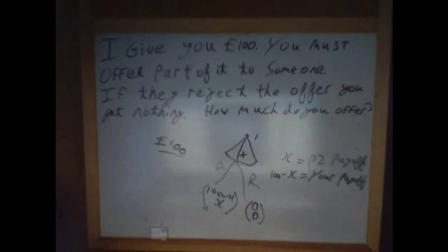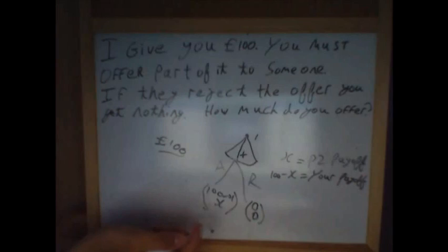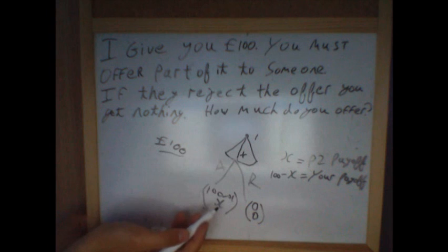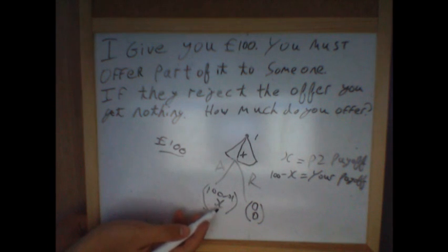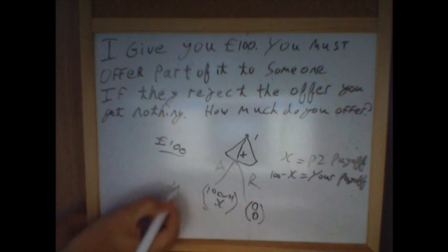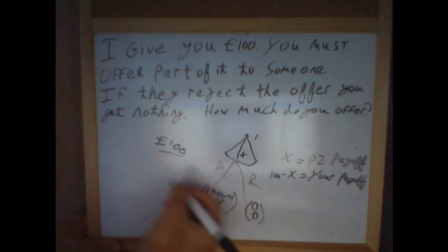Now if we're going to assume perfect rationality, then it seems that the answer — if we work backwards, which is often how you solve dynamic games — is that player two, being rational, will always accept your offer so long as x is greater than zero.